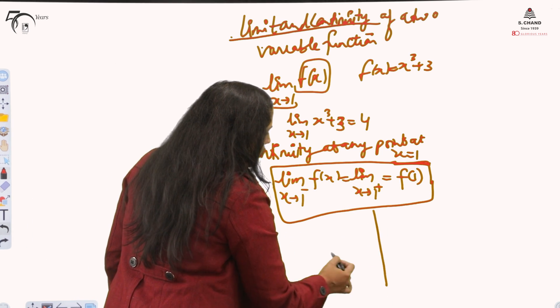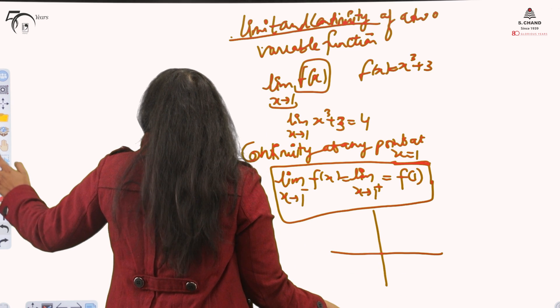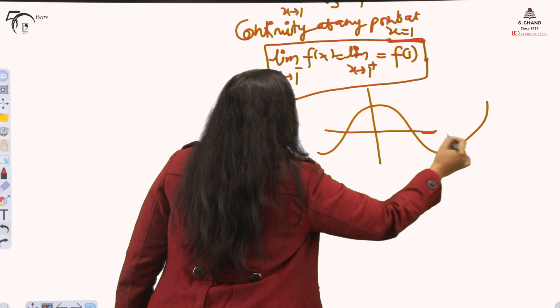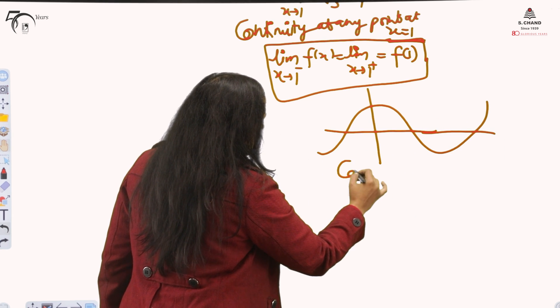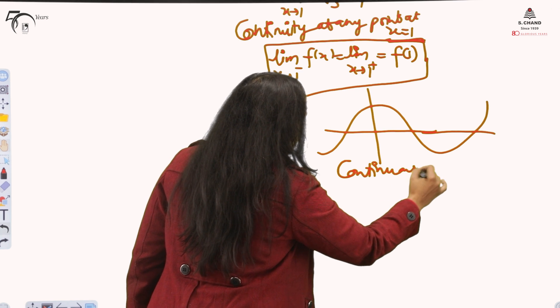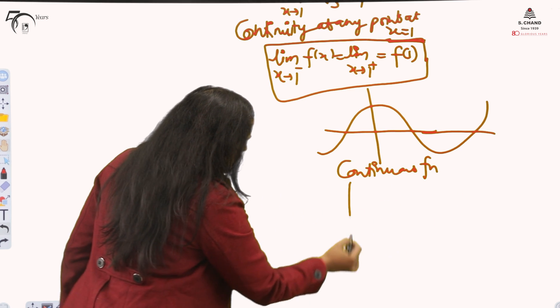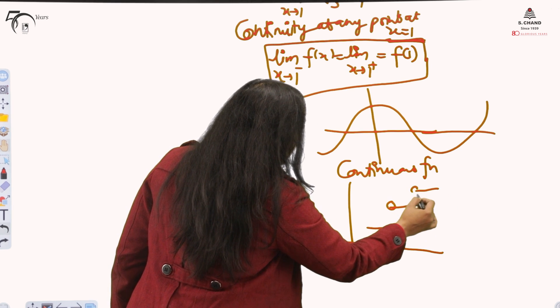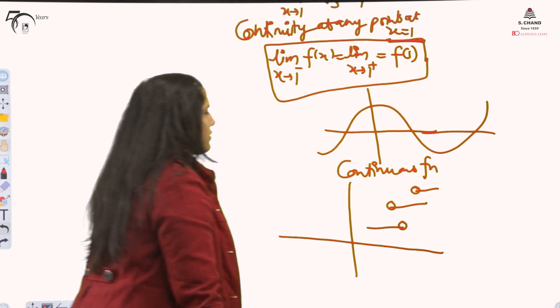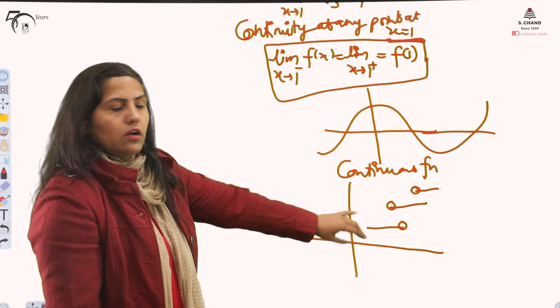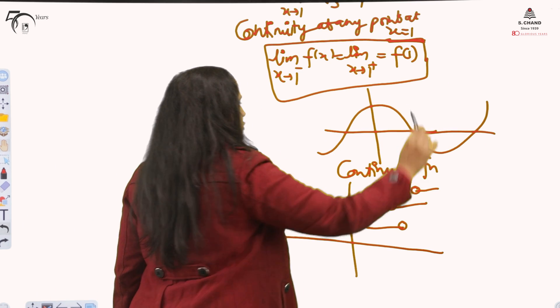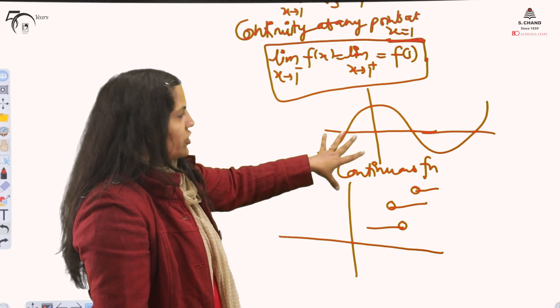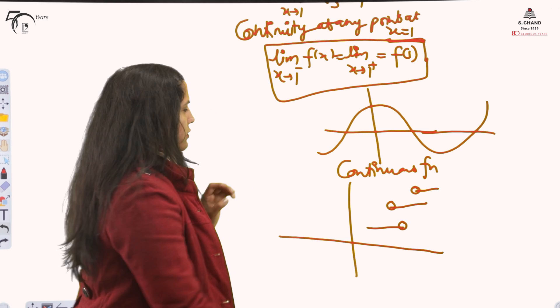The continuous function graph is this. This is the graph, continuous function graph. There is no break, you can see. And this is continuous function. And discontinuous function, obviously, you can see that here there is a disconnection. Here there is a disconnection. This is discontinuous function and this is continuous function. And graphically, I have shown you and how we check theoretically, this also we have done in 12th class.